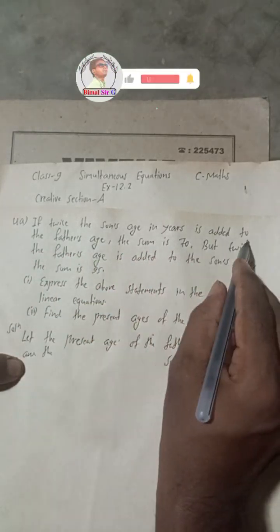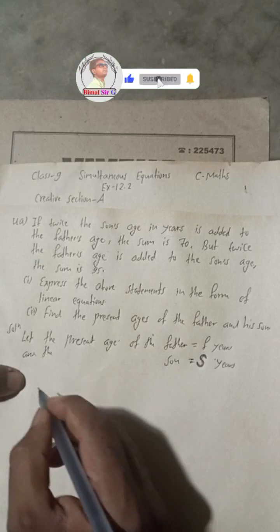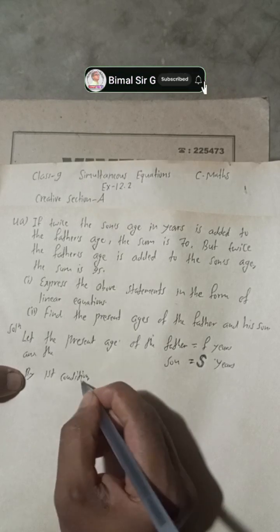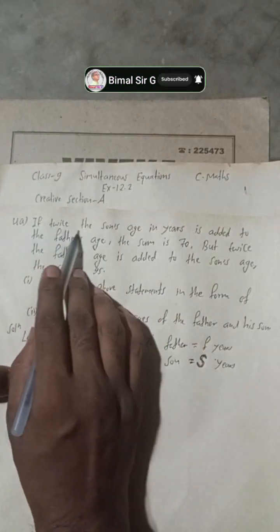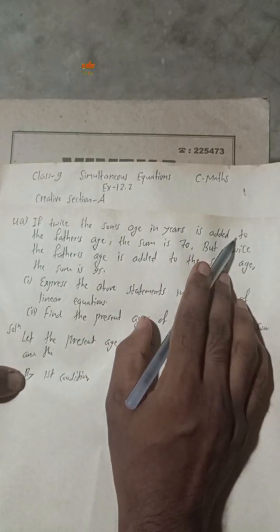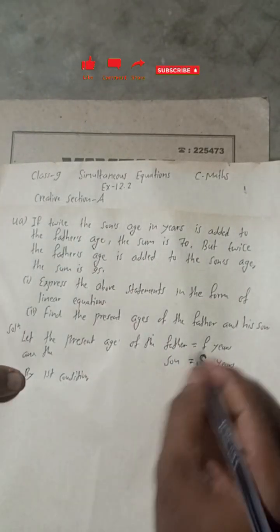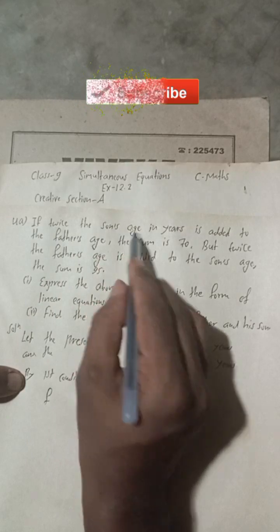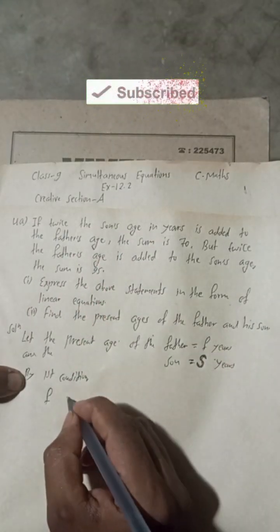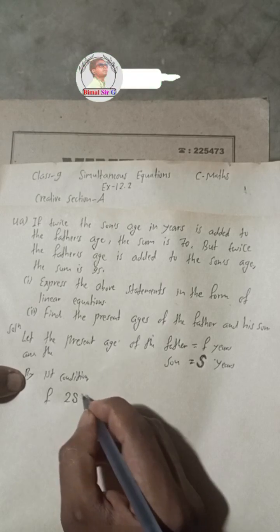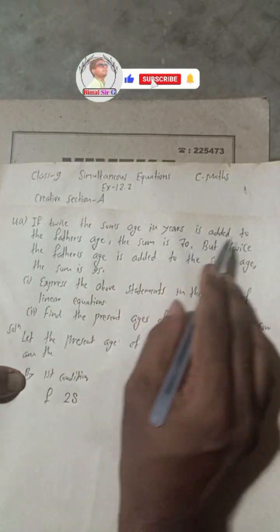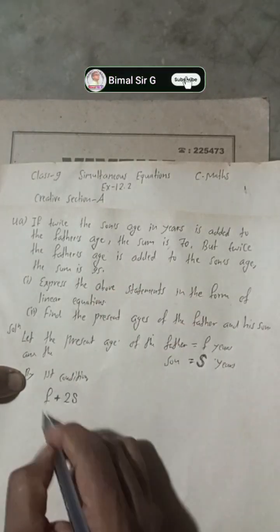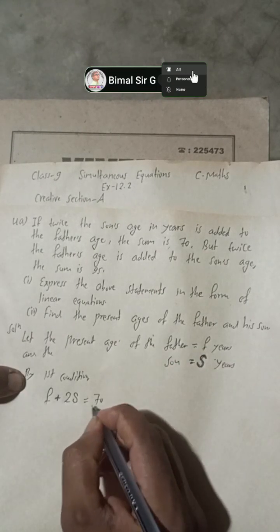By the first condition: if twice the son's age in years is added to the father's age — father's age is F, and twice the son's age is 2S — so F plus 2S equals 70. This gives us our first equation.